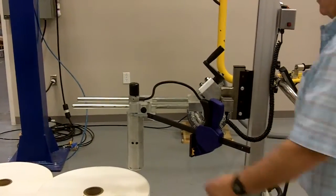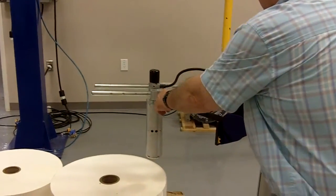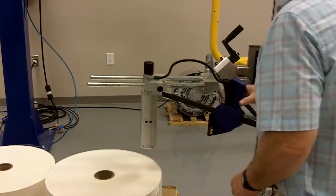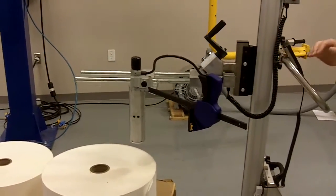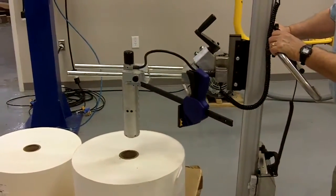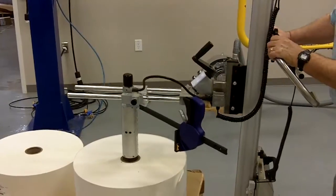For larger rolls, using the same expander, you can move this back and forth, move it into this position. The larger rolls meaning the width, not necessarily the diameter.